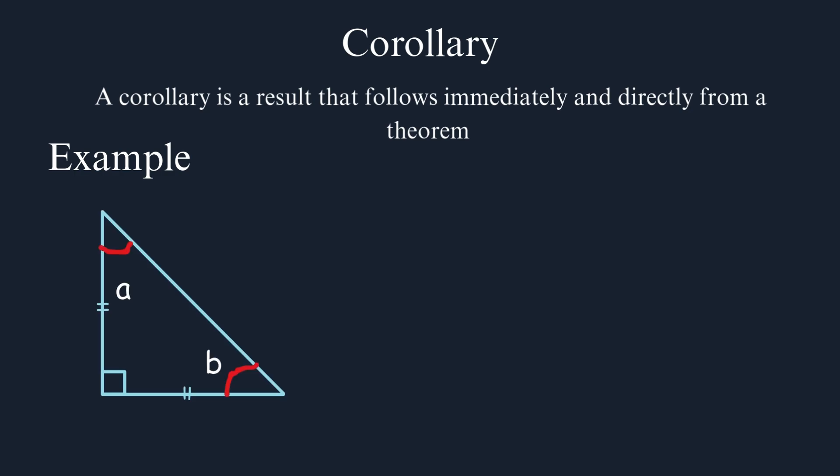Corollary. A corollary is a result that follows immediately and directly from a theorem. For example, in a right triangle, the sum of the two acute angles equals 90 degrees. Why is this true? We know from a fundamental theorem that the sum of interior angles in any triangle equals 180 degrees. In a right triangle, which already contains one 90 degree angle, the remaining two angles must sum to 90 degrees. When you add 90 plus 90, you get the 180 degrees from our original theorem.